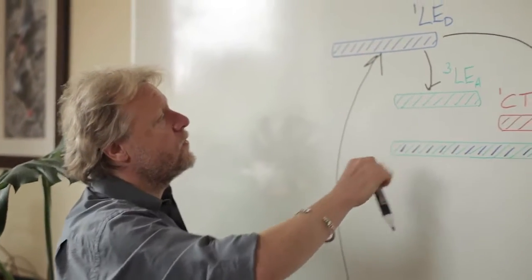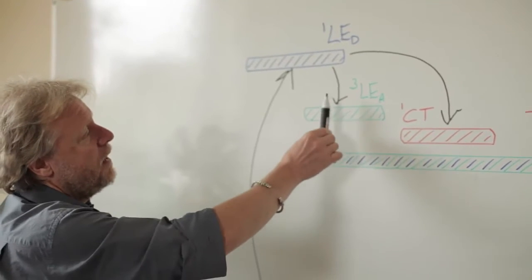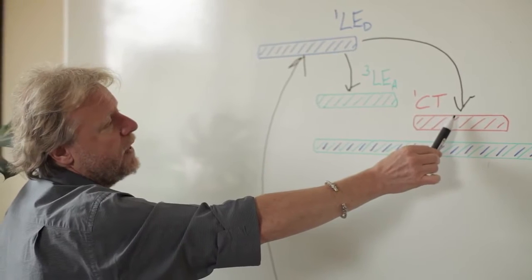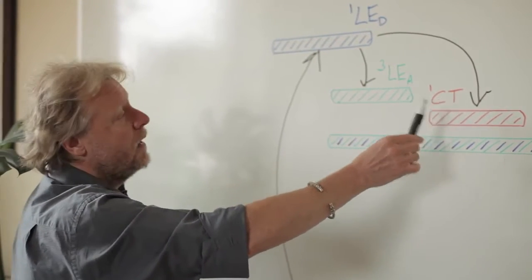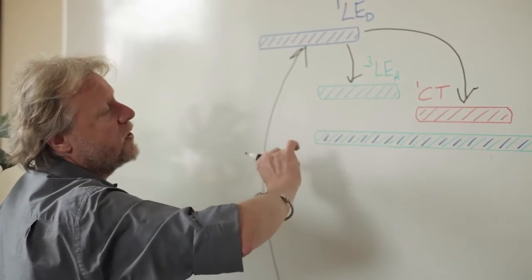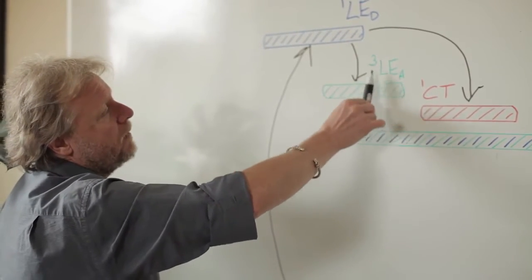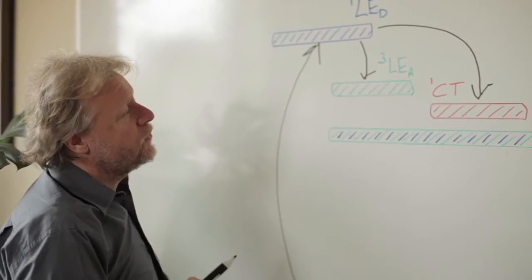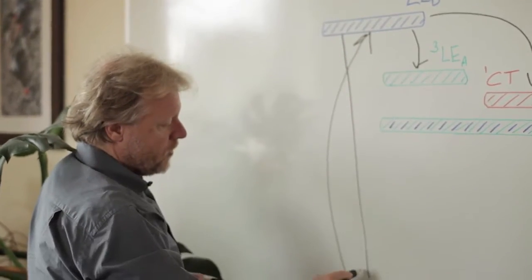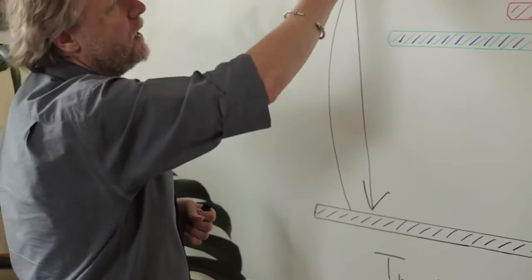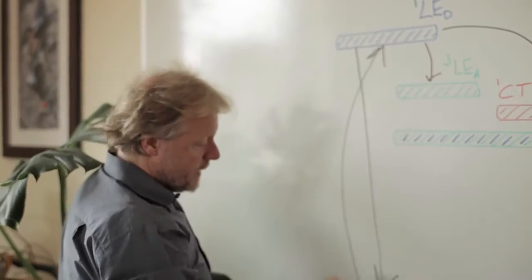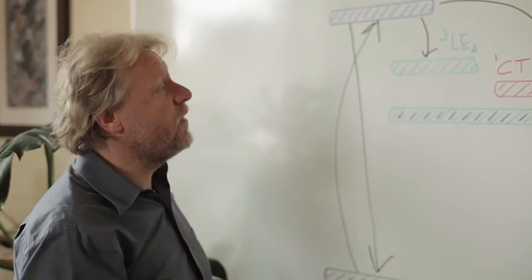Depending on which one has the fastest rate, that dictates which one is the most likely to occur. In a lot of molecules, we find that the rate of this reaction and the rate of the charge transfer reaction is fairly similar, and we get something like about 70% forming charge transfer and about 10% forming the triplet state. There's also a bit of competition with the locally excited state decaying back to the ground state and not giving off any light.